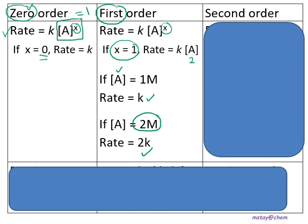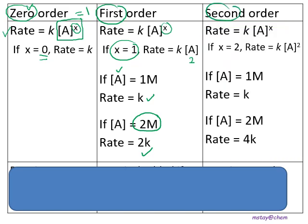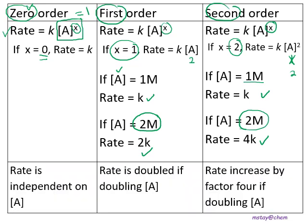Now let's proceed to second order. Based on the general rate law, x is replaced with 2. If concentration of A is 1 molar, 1 to the power of 2 is 1, so rate = k. But if concentration of A is doubled to 2 molar, 2 to the power of 2 equals 4, so the rate becomes 4k.